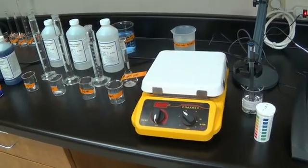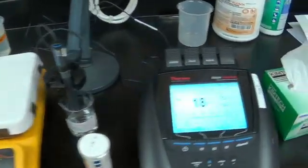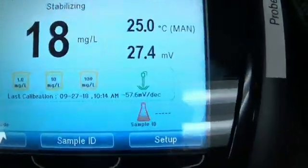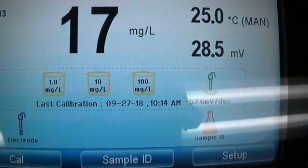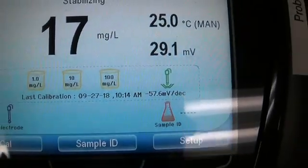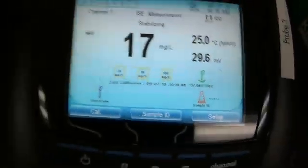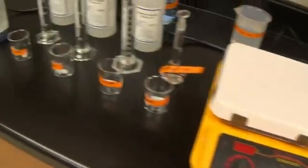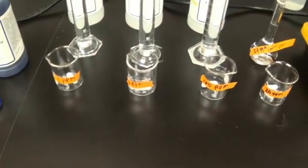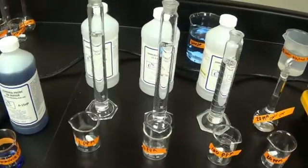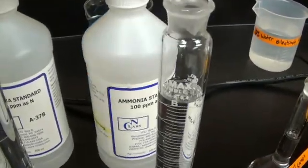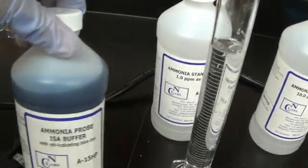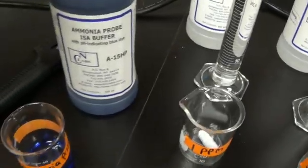Alright, I am going to now calibrate for ammonia. And I'm going to do the higher level of ammonia. I'm going to use a 1 ppm, 10 ppm, and a 100 ppm to calibrate. So I have my beakers ready and my standards ready. My 1, my 10, and my 100. I have my ISA poured off into a small beaker.